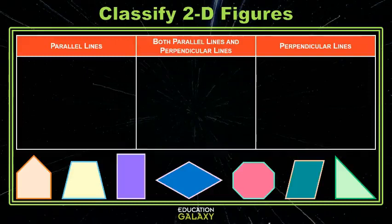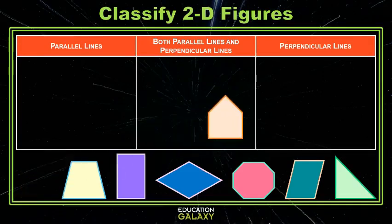Now let's look at lines in figures. Remember, parallel lines do not touch and perpendicular lines intersect at a right angle. So that first figure, the pentagon, does appear to have both parallel and perpendicular lines. You'll see the parallel lines here, and then perpendicular lines here, and here, and maybe even here.